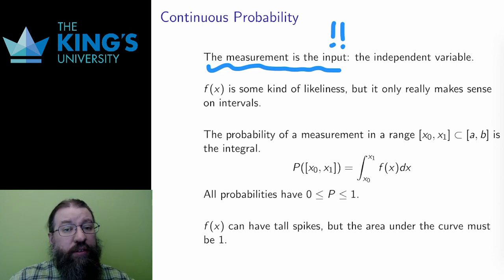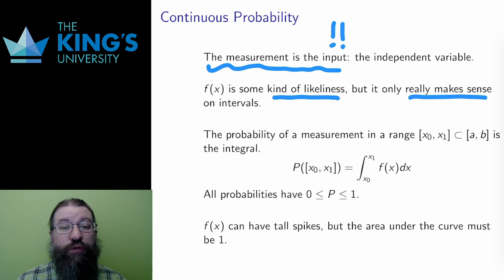So the output is a probability, sort of, but not for individual measurements. A specific height, say exactly 6 meters, is actually impossible. Instead, probability only makes sense for a range of heights. How is that determined? Well, by the interval.